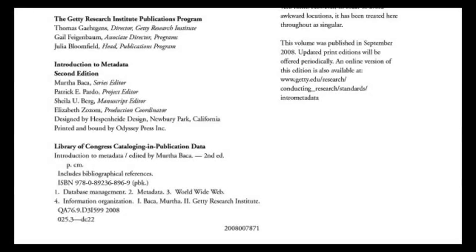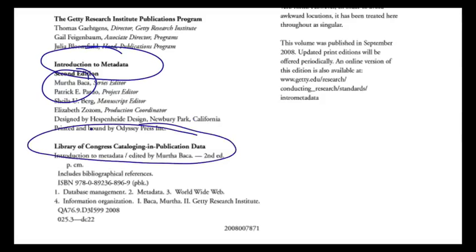Library of Congress subject headings are the data about the subject of a book that's on the copyright page of a book. This is a part of the copyright page of this book, An Introduction to Metadata by Mirtha Baca, which is a really excellent book by the way. Often on the copyright page of books you get this Library of Congress cataloging and publication data, where you get some bibliographic details, including the title, the author, etc., but you also get subject headings. Database management, metadata, World Wide Web, and information organization. Those four are subject headings, and they are in fact taken from the Library of Congress subject headings.